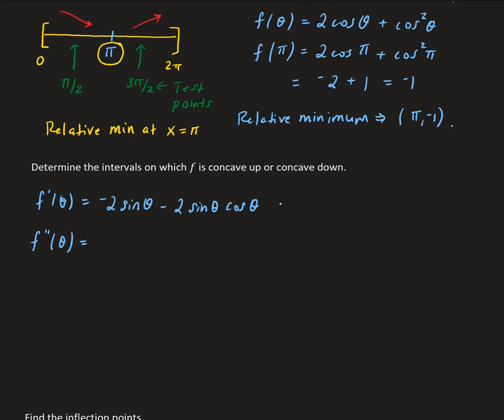The derivative of sine is cosine, so we get minus 2 cosine theta. Then we apply the product rule to the second term, giving sine theta times the derivative of cosine theta plus cosine theta times the derivative of sine theta.